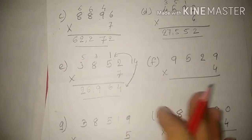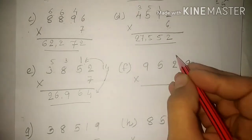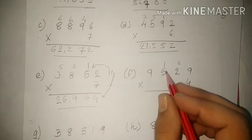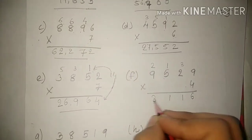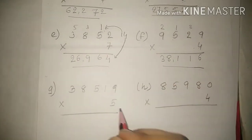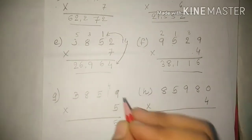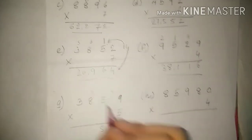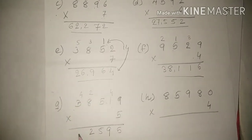This is your answer. The next one: 9 fours are 36. 4 twos are 8 plus 3 is 11. 4 fives are 20, 20 plus 1 is 21. And 9 fours are 36 plus 2 is 38. Next: 5 nines are 45, 4 will go up as carry. 5 ones are 5 plus 4 is 9. 5 fives are 25. 5 eights are 40 plus 2 is 42. 5 threes are 15, 15 plus 4 is 19.